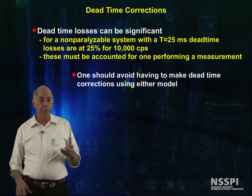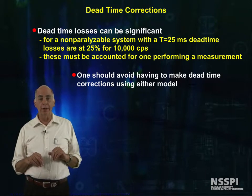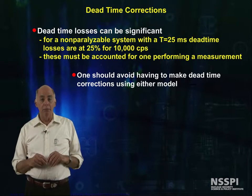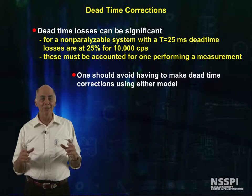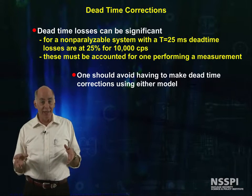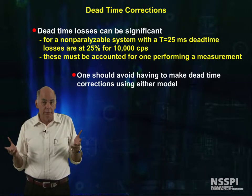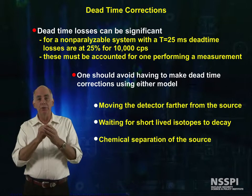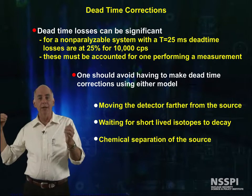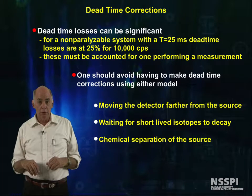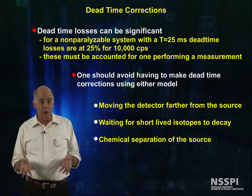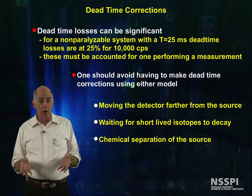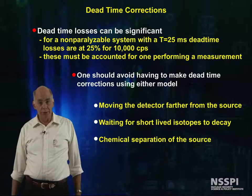There are formulas that we can use to correct for dead time, but the best plan is simply to avoid making large dead time corrections at all. How can we do this? It can be as simple as moving the detector further from the source, waiting for short-lived isotopes to decay some, or as complicated as chemical separation of the source.